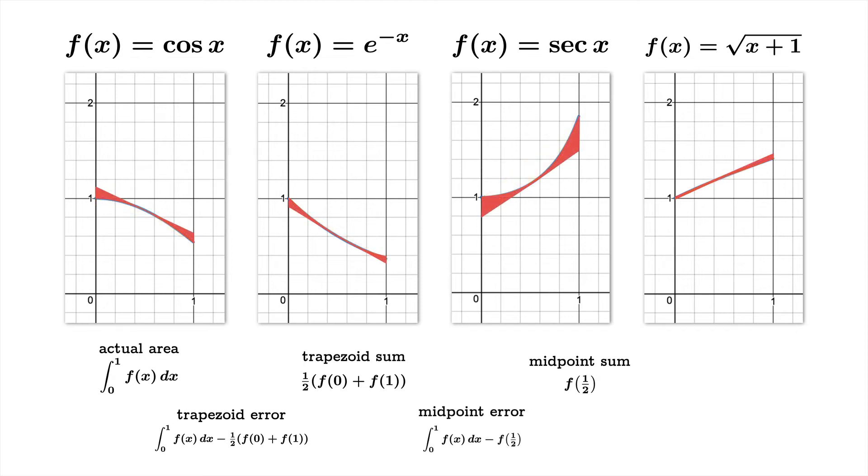And then we'll look at the midpoint error, which is we'll take the actual value and subtract off the midpoint sum. You'll notice that the midpoint errors already give you a feel for the fact that the midpoint errors are more slivery than the trapezoid errors we just looked at a moment ago. They're very thin in the middle and they flare out a little at the ends, but we have this visual impression that perhaps the midpoint errors are smaller than the trapezoid errors.